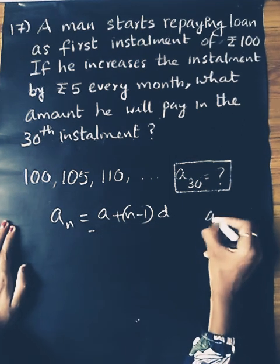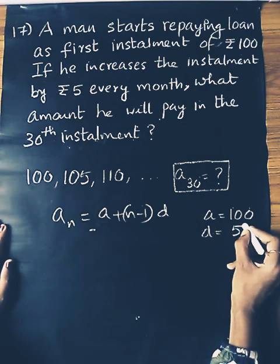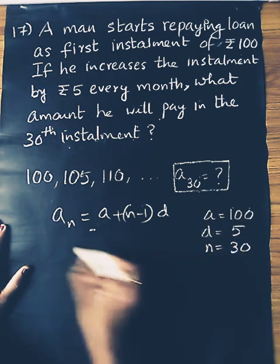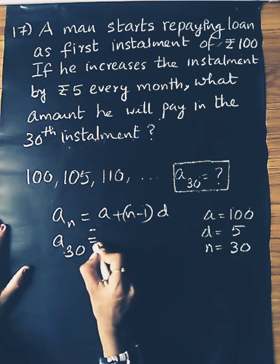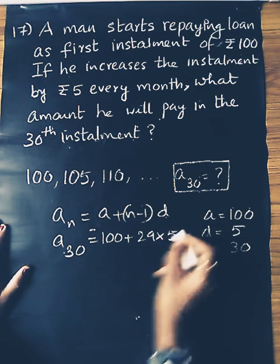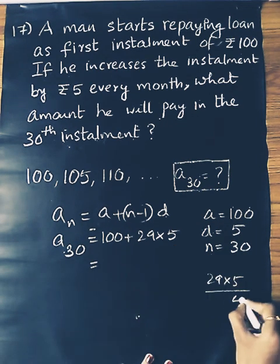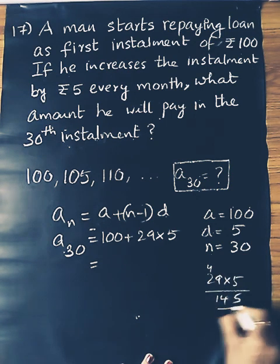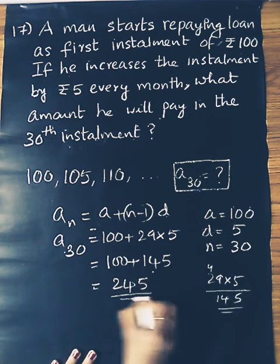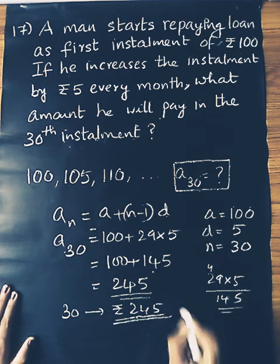Using the AP formula: An equals A plus (n-1) into d. Here A equals 100, d equals 5, and n equals 30. So A30 equals 100 plus 29 into 5. That gives 100 plus 145, which equals 245. Therefore, the 30th installment is Rs. 245.